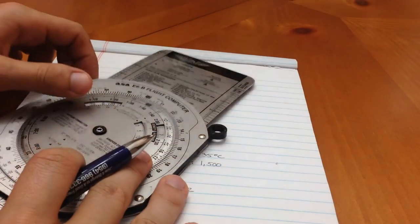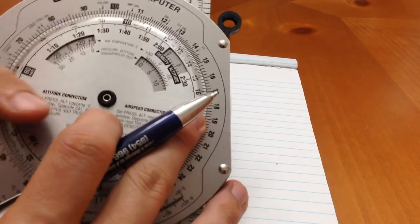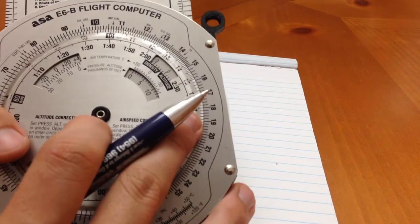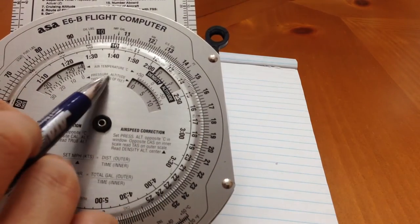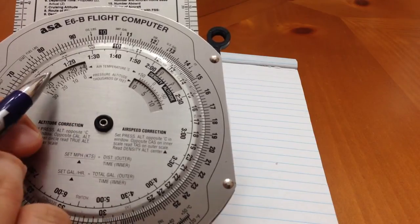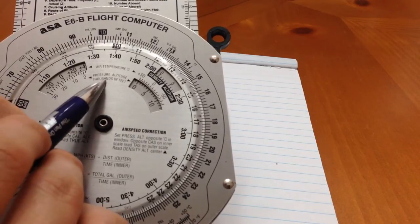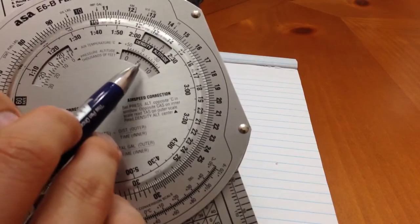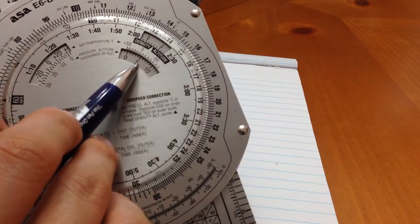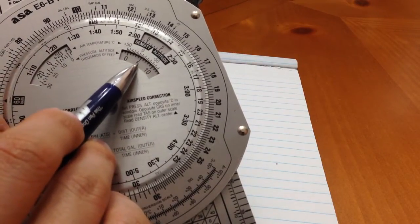Let's go ahead and find our density altitude. Density altitude is fairly simple. You just have to understand what the scale of these sections are, and they're all in thousands of feet. Some people get confused and think that the five is 500 feet when it's actually 5,000 feet.